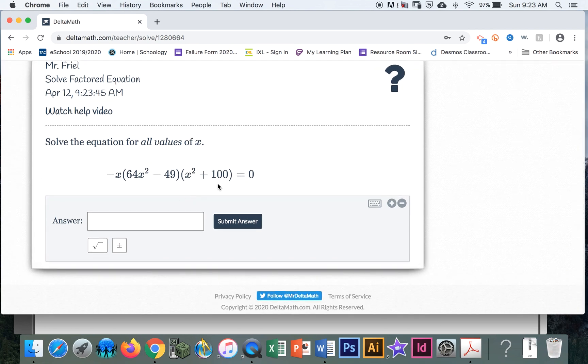So negative x equals zero. So that answer is going to be zero. 64x squared minus 49. So I'm going to have to factor that guy out. So that's 8x minus 7, 8x plus 7. Set them both equal to zero.